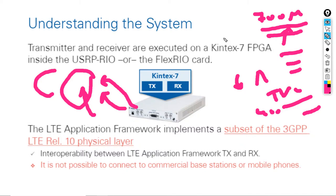To summarize, there are three solutions: either use unlicensed spectrum, or reduce power so you don't interfere with others and limit transmission within a room or building, or use the cognitive radio concept — make an agreement with the company that owns the spectrum, pay them to rent it when they're not using it, and start serving your customers.